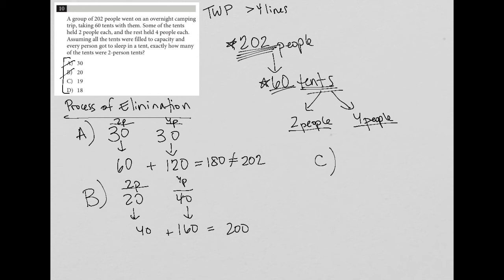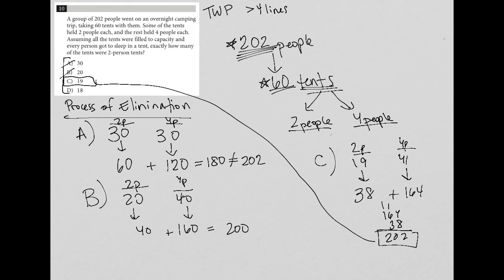Choice C is 19. So if I had 19 two-person tents, that would represent a total of 38 people. And that would mean that I had 41 four-person tents. 41 times 4 is 164. And then if I add those two together, so 164 and 38, don't forget, we cannot use a calculator on this section. 4 plus 8 is 12. And 1 plus 6 is 7. Plus 3 is 10. So 0 and 1. And here we go, 202. So therefore, my correct answer here is choice C. There must have been 19 two-person tents. 202. Thank you.